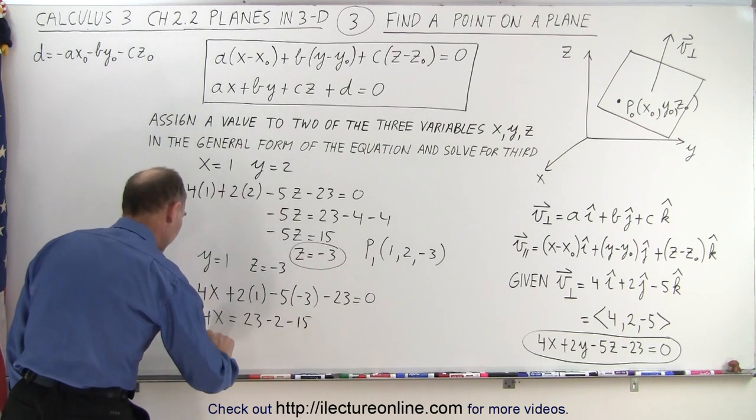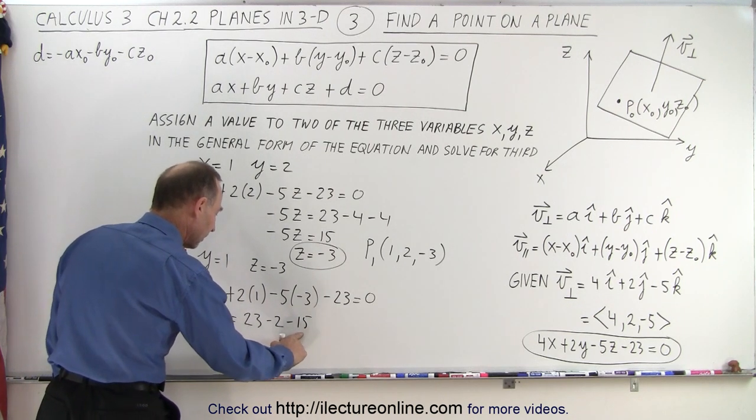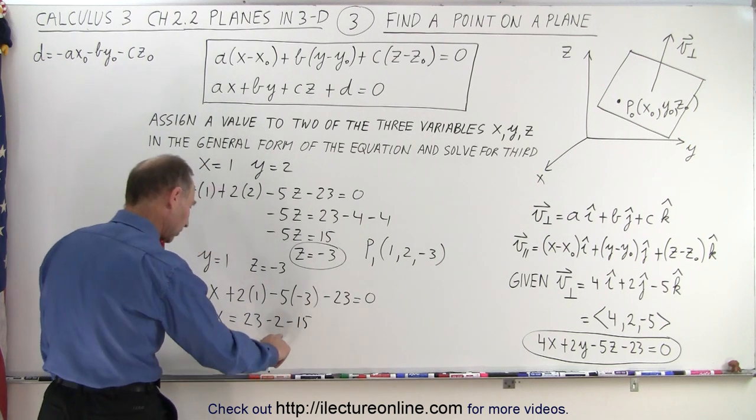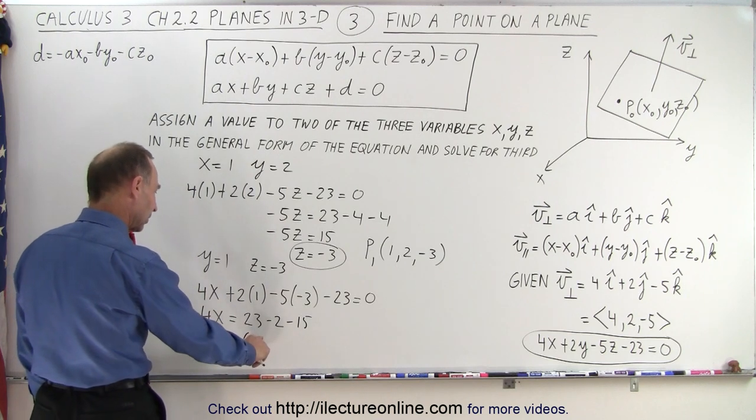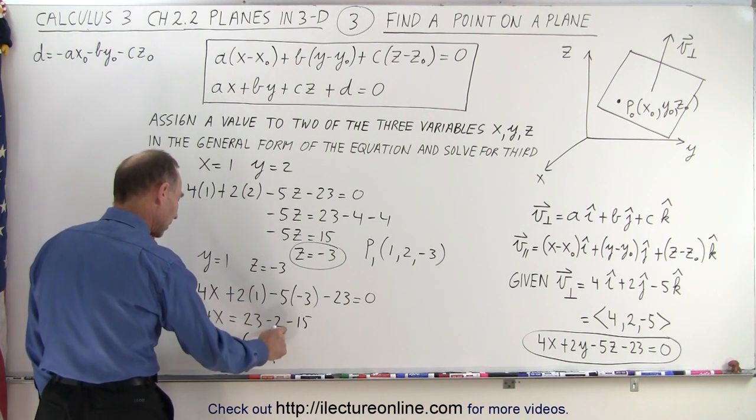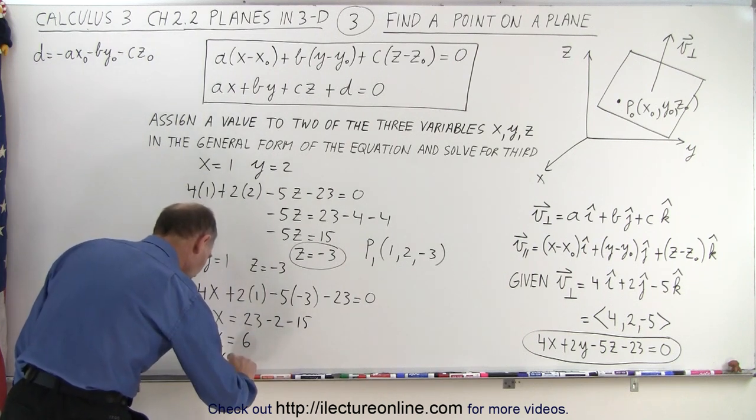And so we get 4x is equal to 23, minus 2, that's 21, minus 15, that would be, I think, 4, right? That's 17, no, 6. So let's see, that would be equal to 6. Let's try it again. So with 23, that would be minus 15, that's 8, minus 2, that's 6. So we get x equals 1.5.